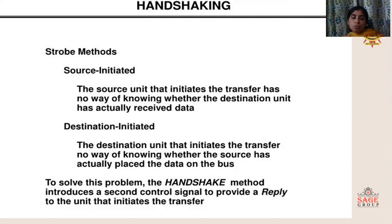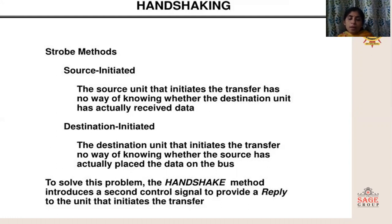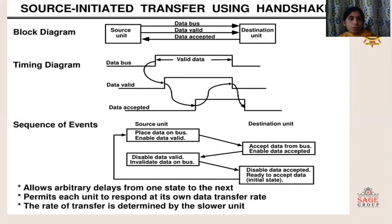To overcome this problem, the handshake method is introduced. It provides one extra control signal for giving a reply to the unit that initiates the transfer, so that the source unit can know whether the data has been received by the destination.